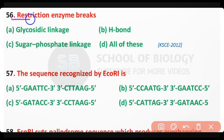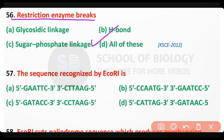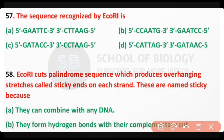Question number 56: Restriction enzymes break the — glycosidic linkage, hydrogen bond, sugar-phosphate linkage, or all of these? The correct answer is option C. Restriction enzymes break the sugar-phosphate linkage in DNA.